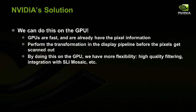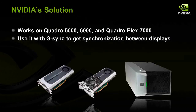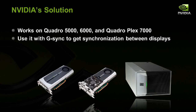By doing it on the GPU, we have high-quality filtering and integration with SLI Mosaic so it's aware of multiple screens making up a single desktop. This solution works on the Quadro 5000, 6000, and QuadroPlex 7000 products, all of which will be shown in our booth starting tomorrow. It also works with our G-Sync products, which allow synchronization using GenLock and FrameLock to guarantee all displays are synchronized across your whole environment.